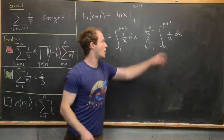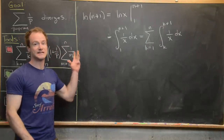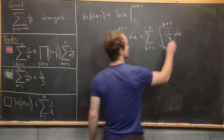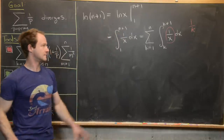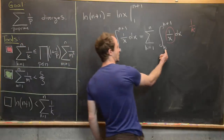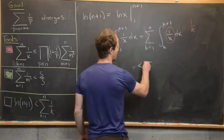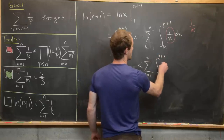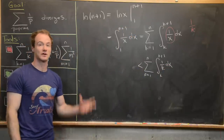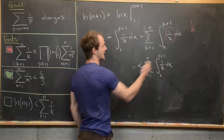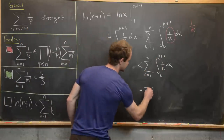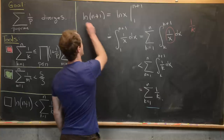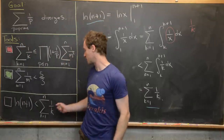Since 1/x is decreasing for positive values, on the interval [k, k+1] we have 1/x ≤ 1/k, so we can replace 1/x with 1/k and introduce an inequality. The sum from k=1 to n of the integral from k to k+1 of 1/k dx is just integrating a constant over an interval of length 1, giving the sum from k=1 to n of 1/k. This establishes the third inequality: ln(n+1) ≤ ∑1/k.